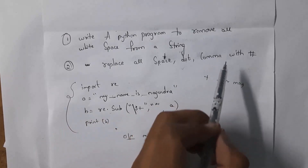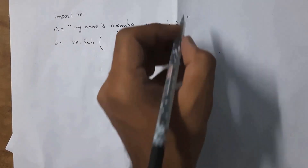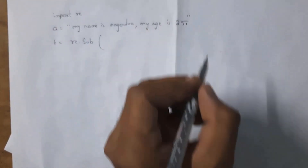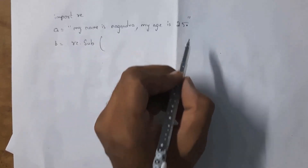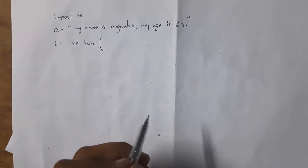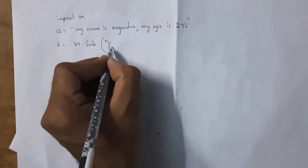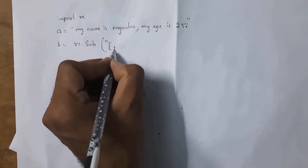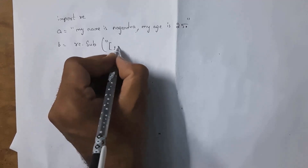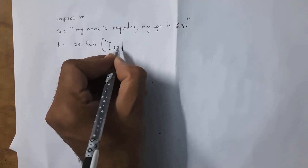Next, I'll explain how to replace all spaces, dots, and commas with the hash symbol. The string is: 'my name is nagendra, my age is 25.' I want to remove the space, comma, and full stop symbols and replace them with the hash symbol. Using the substitute function, inside sub write a character class in square brackets containing space, comma, and full stop.